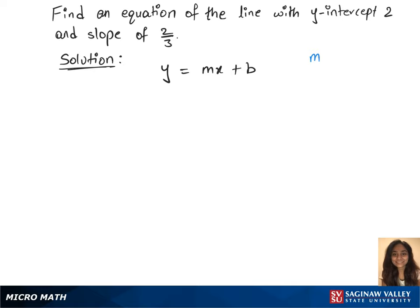We have the slope, which is m equals 2 over 3, and the y-intercept, which is b equals 2. We can plug in these values in the formula: y equals (2/3)x plus 2, and that's the equation of the line.